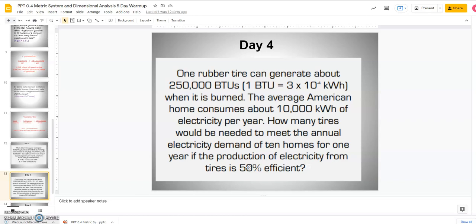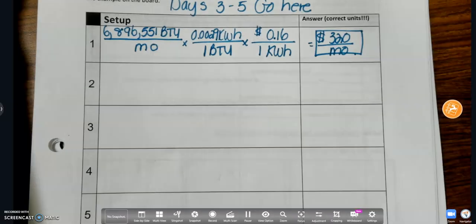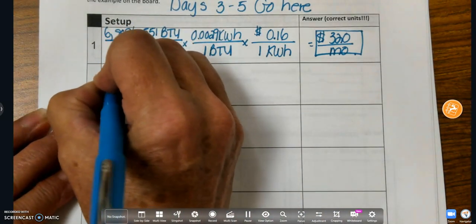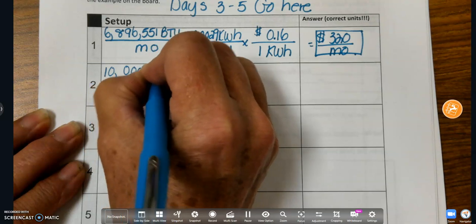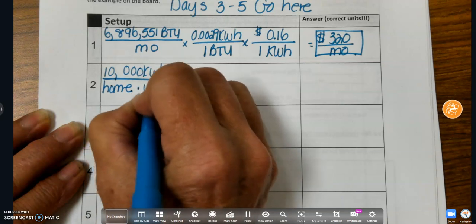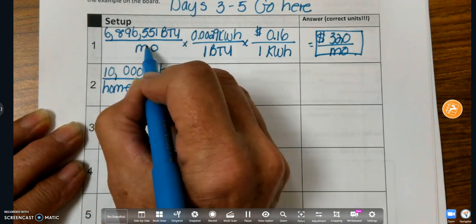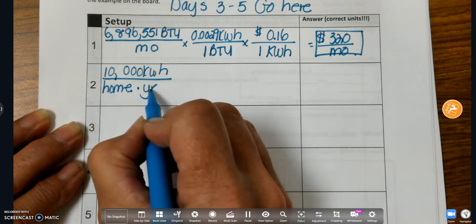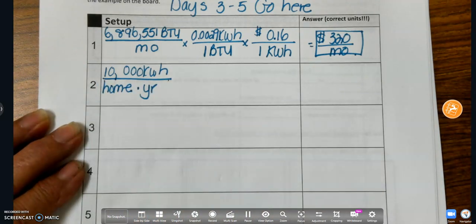We want 10 homes for one year. Many students will work it out for one home and forget to do 10 homes. And if the production of electricity from tires is 50% efficient, that means that no matter what I do, I've got to put in double because I'm only going to get half back, right? So the way that I would do this one is I would say my given is 10,000 kilowatt hours per home per year. Remember that per means line, per home, per year, okay? Per means that you put a fraction there, okay?